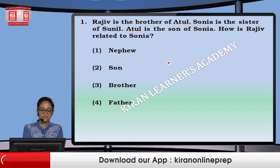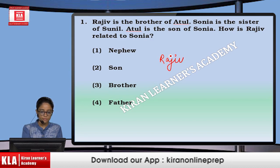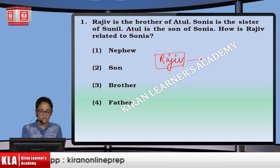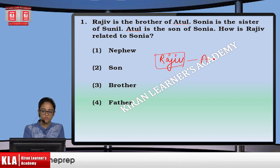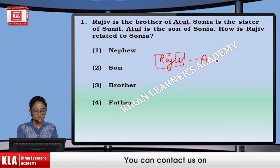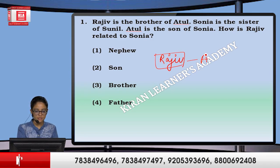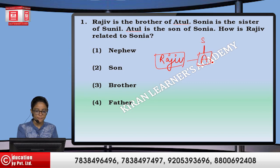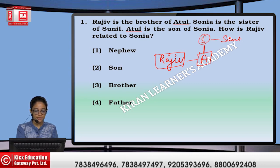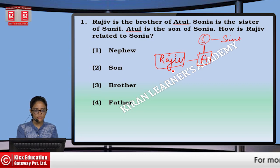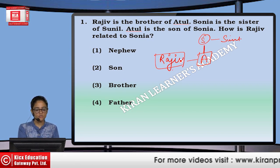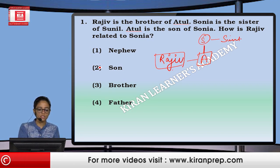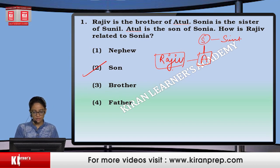Question: Rajiv is brother of Atul. Sonia is sister of Sunil. And Atul is son of Sonia. How is Rajiv related to Sonia? Rajiv will also be the son of Sonia. That means option number second.